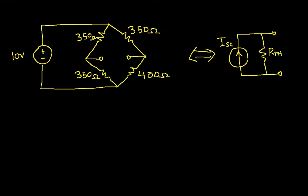We'll find RTH in two ways. The first way is we'll find the open circuit voltage, then the short circuit current, and then RTH is VOC over ISC. The other way we'll find it is we'll actually just find the equivalent resistance for RTH directly. And since we've already found ISC, we'll have the Norton equivalent circuit as well.